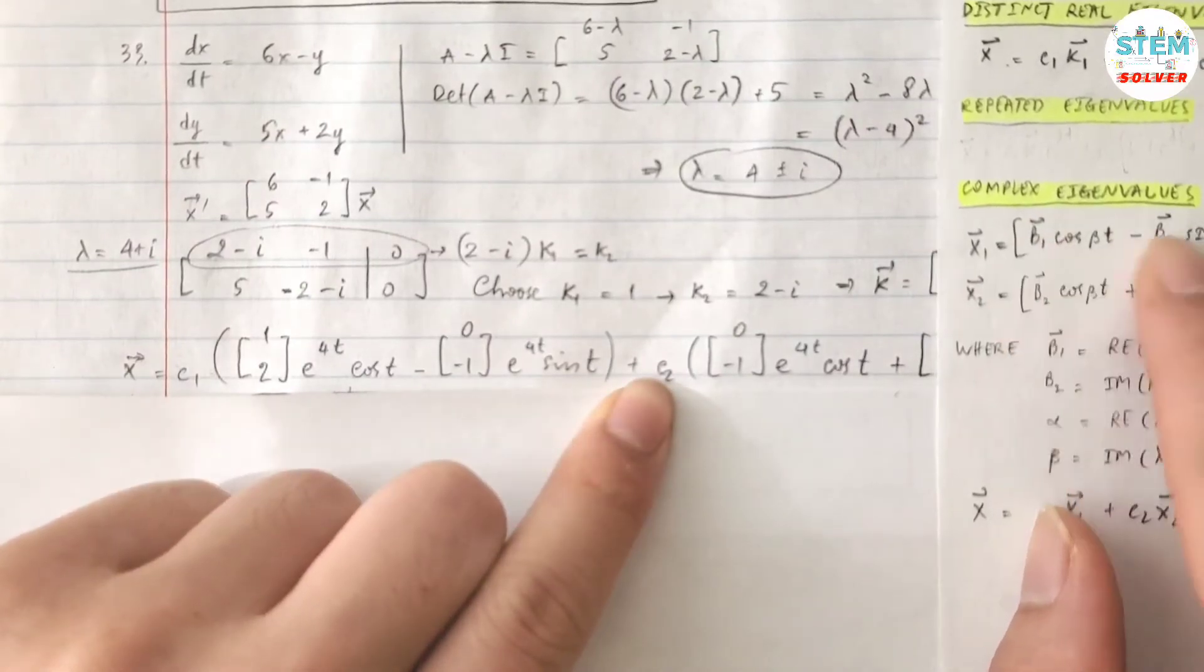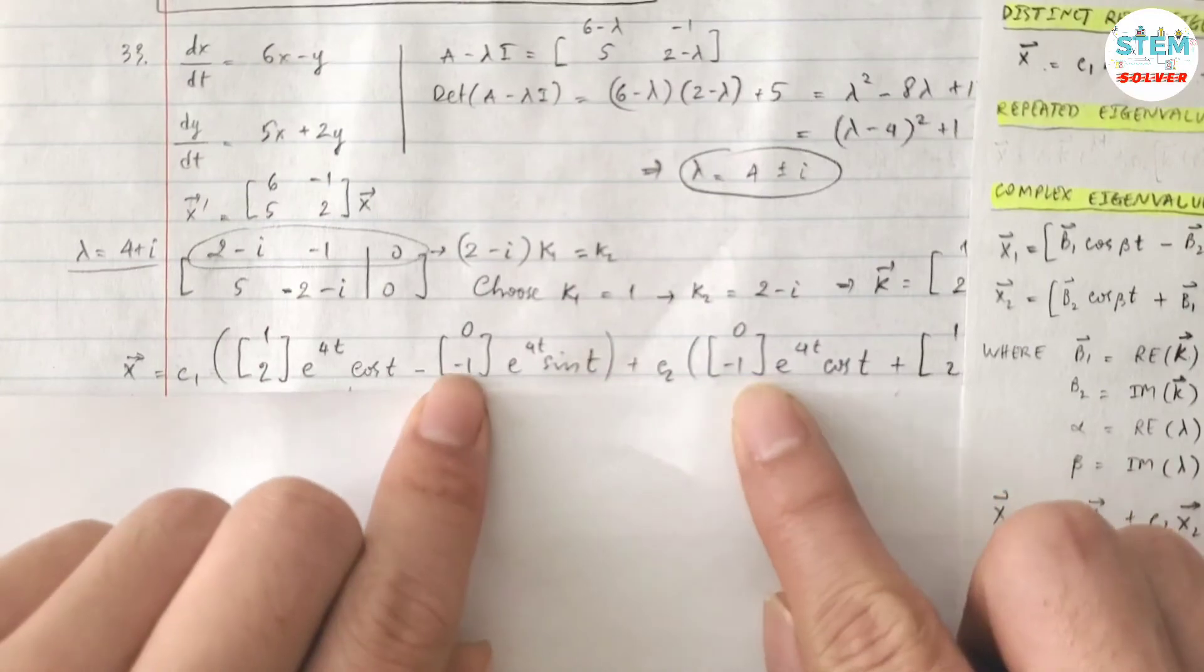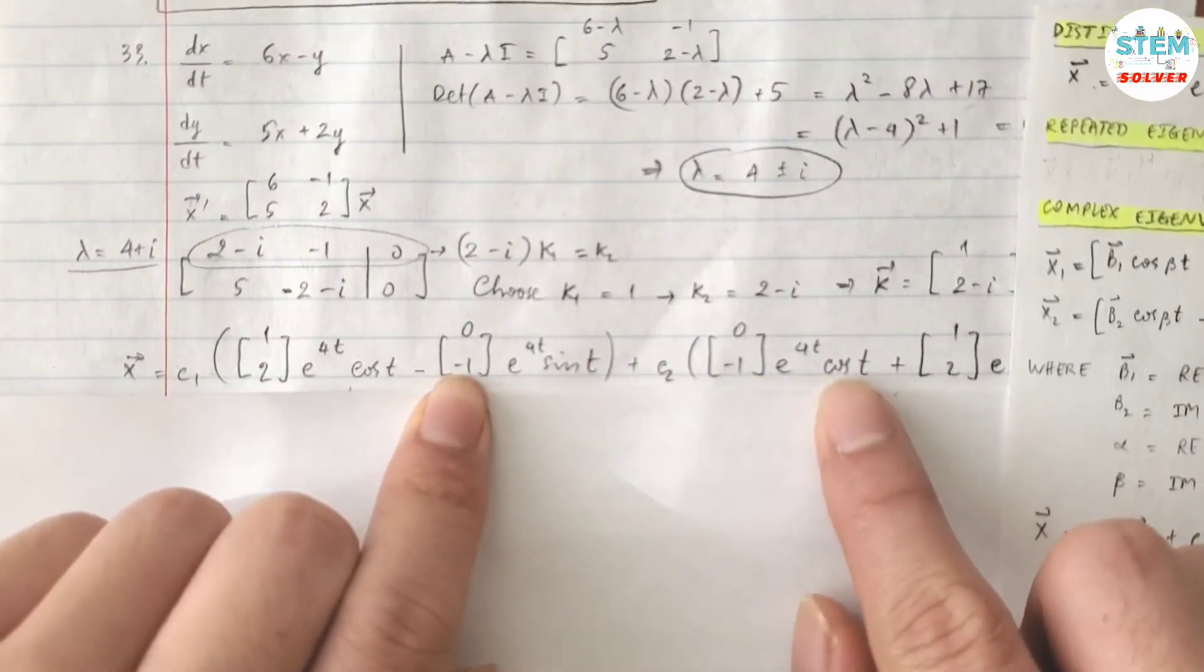And then plus, so you just switch the vectors together b2 and b1, plus, so take this, multiply by this, everything stays the same.